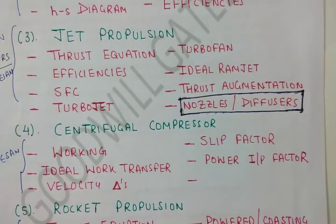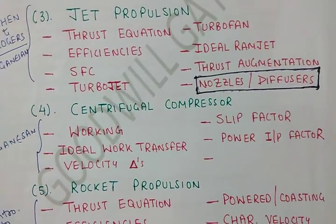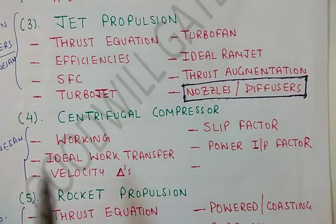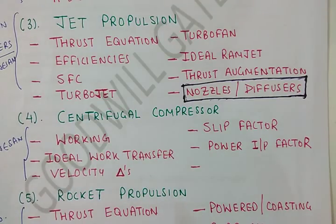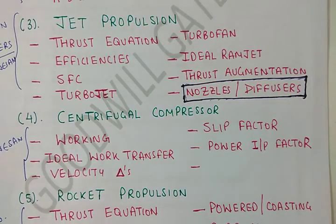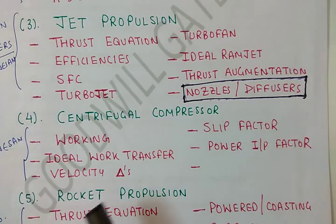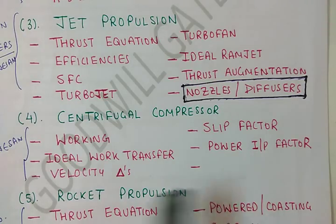The next topic is centrifugal flow compressor, which is a totally different compressor from the axial flow type — here the radius of the flow changes. We'll discuss its working, parameters like power input factor and slip factor, velocity triangles, ideal work transfer, and many other important topics in centrifugal flow compressors.